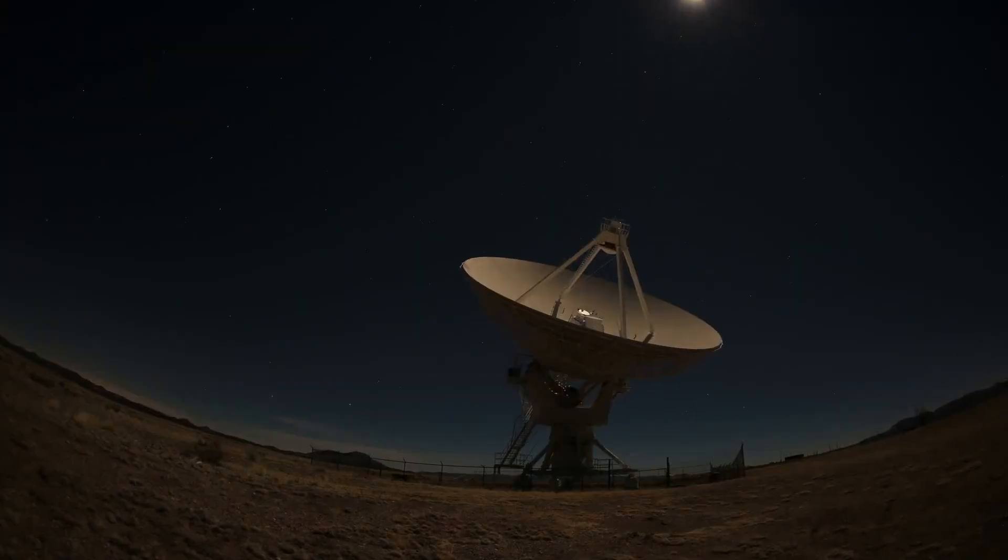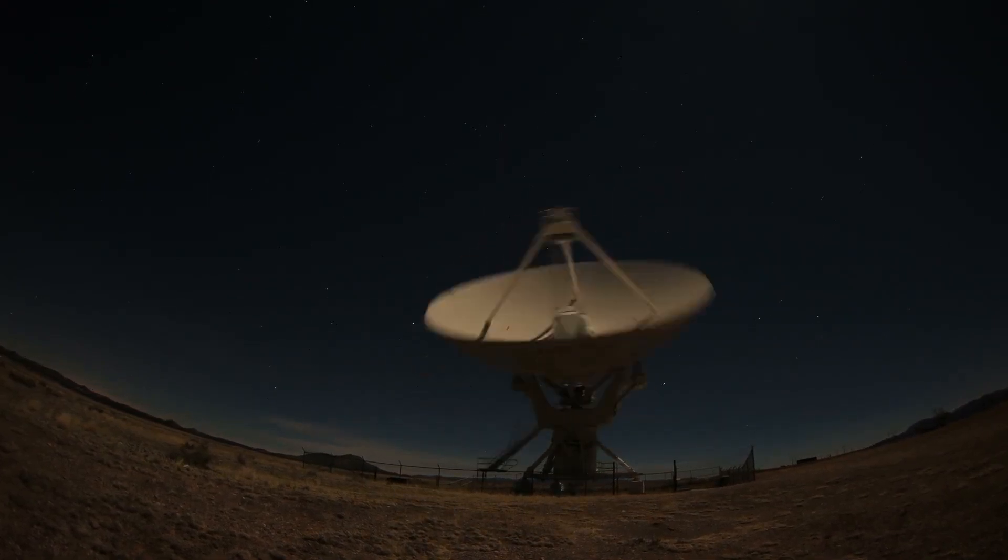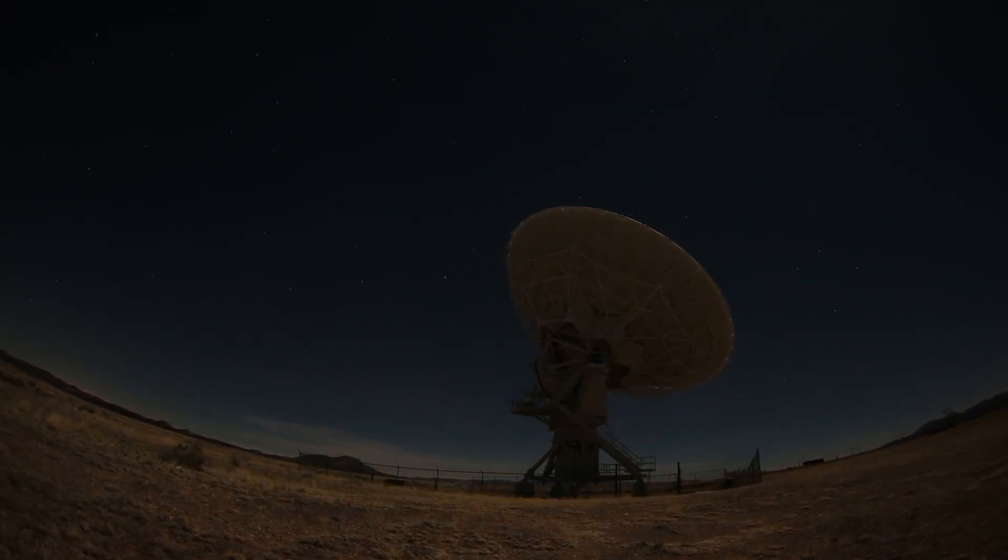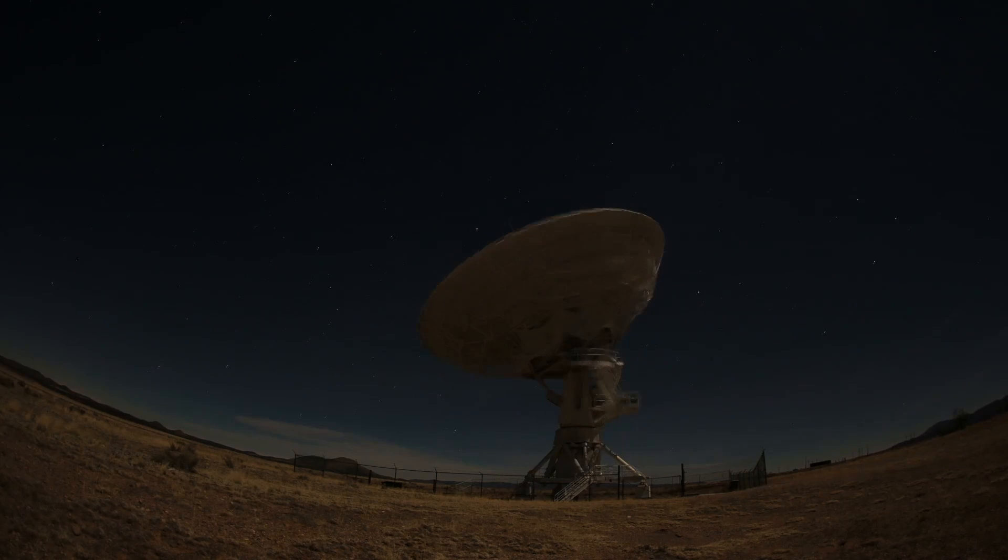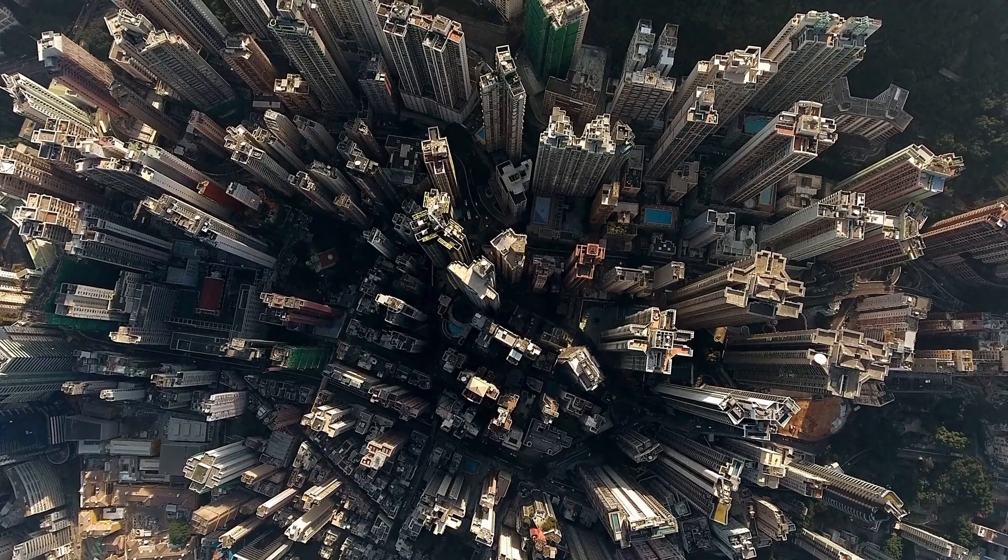Scientists studying Proxima b have observed what appears to be artificial lighting on its night side. This isn't sunlight reflected from a surface or natural geological activity. The pattern suggests something else, something potentially intelligent.